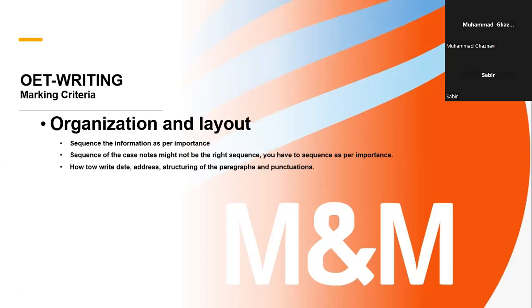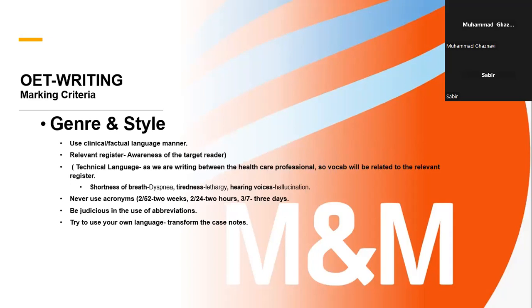Then we have organization and layout. In the layout and organization part, sequence the information as per importance. Whatever the importance sequence is, accordingly you have to sequence the information. The sequence of case notes might not be the right sequence — you have to organize as per importance. Layout involves how to write down the address, punctuation, structure, and so on. In conciseness and clarity, you need to see which information is less relevant and summarize those down.